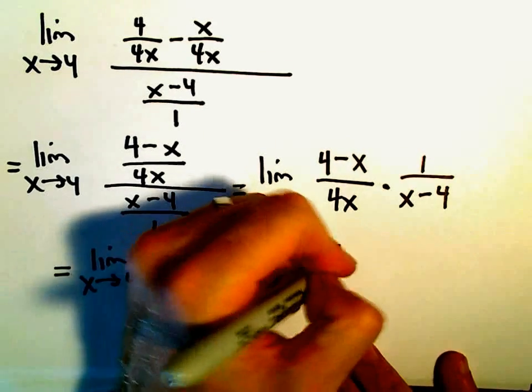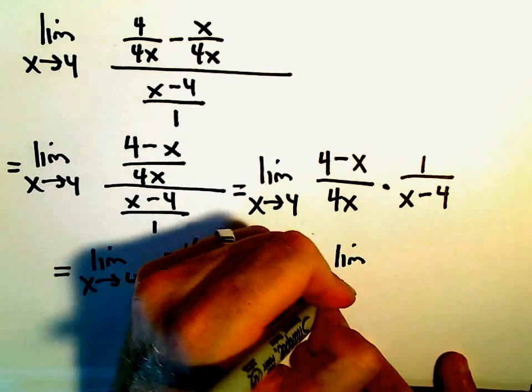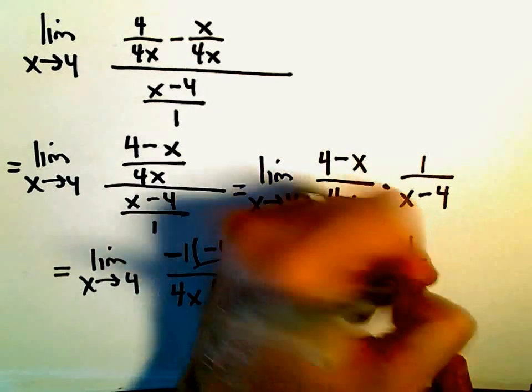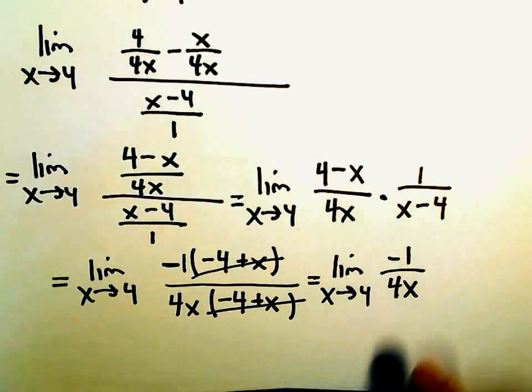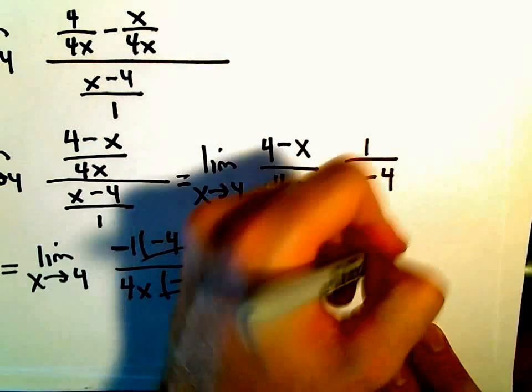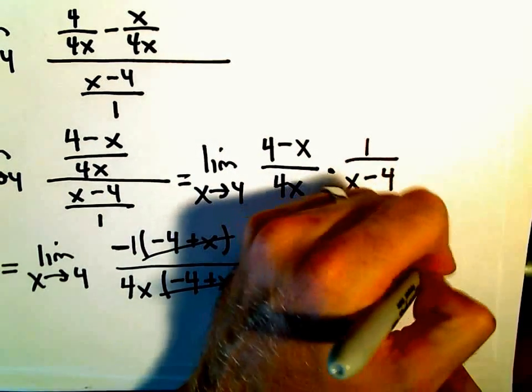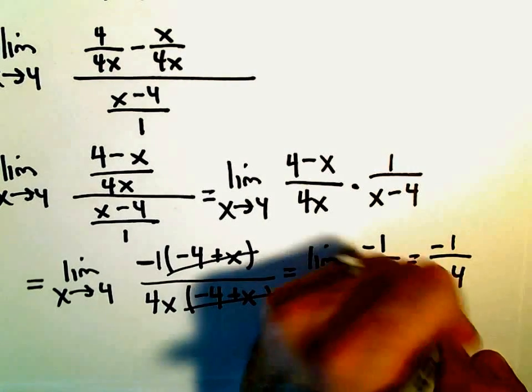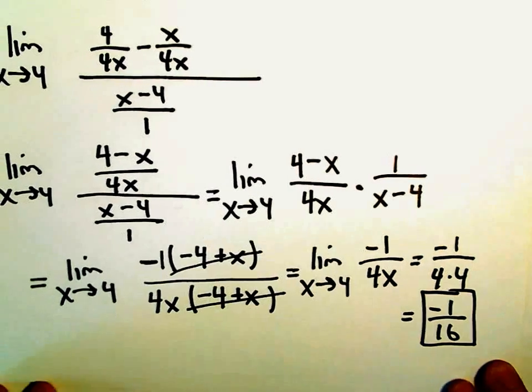So we've got the limit as x approaches 4 of negative 1 over 4x. And now we can just plug in our value of x equals 4. And then we'll have our solution. So we've got negative 1 over 4 times 4, which would give us negative 1 over 16 as our final answer.